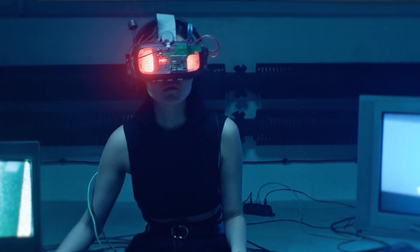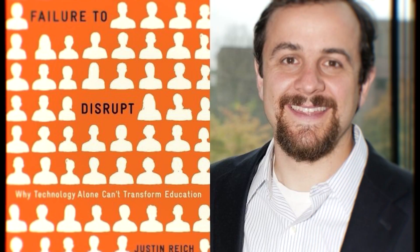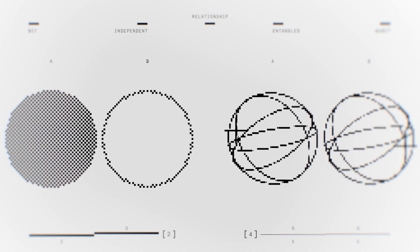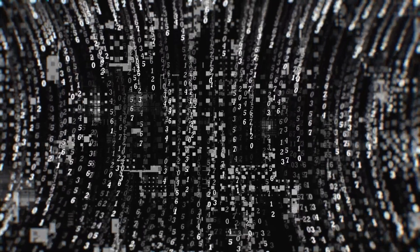If you want to know more about why educational technology keeps promising revolutions but delivering disappointments, check out Failure to Disrupt by Justin Reich. He spent years at MIT studying exactly why every new technology promises to transform education, but ends up reinforcing the same old patterns. Resistance, adaptation, change. It's a really good read. And if you're looking for more history on artificial intelligence, go watch this video on the entire history of artificial intelligence. It's a really good story.